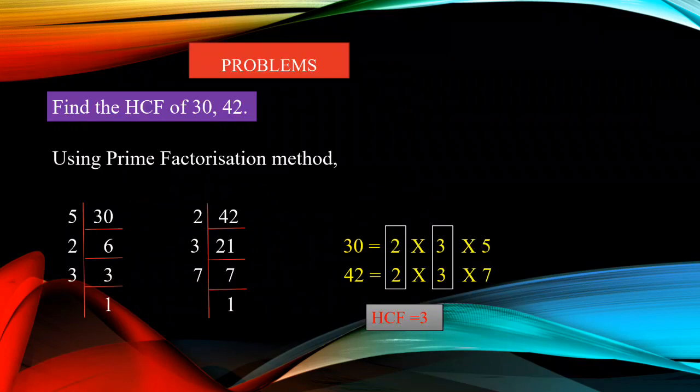Now, same HCF sum we are going to do using the prime factorization method. Your example: 30 and 42. As I said in the last class, for the prime factorization method, we are using the division method only.